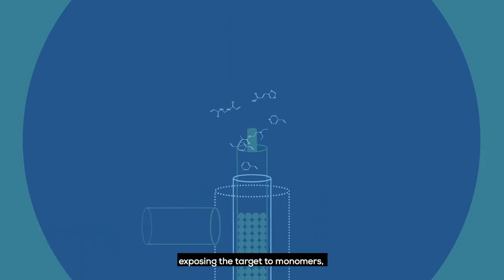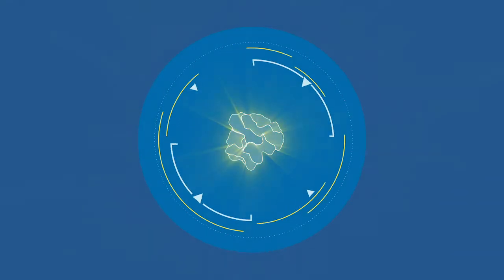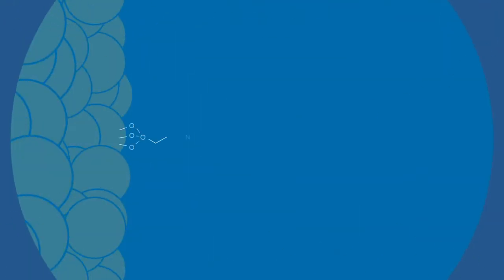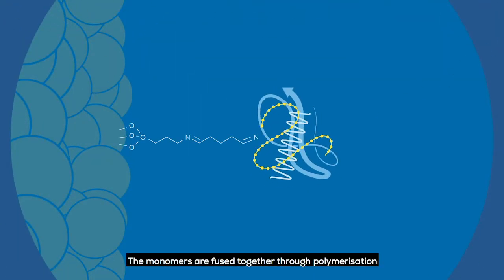The nano MIP is made by first exposing the target to monomers, which find their optimal binding positions on the target through a self-assembly process. The monomers are fused together through polymerization.